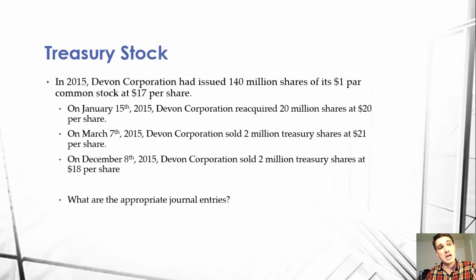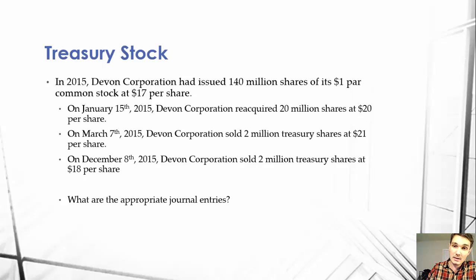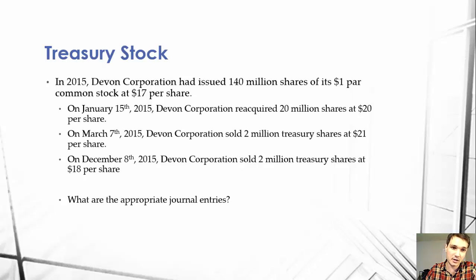I wrote this fun little question. In 2015, Devin Corporation had issued 140 million shares of its $1 par common stock at $17 per share. On January 15, 2015, Devin Corporation reacquired 20 million shares at $20 per share. On March 7, 2015, Devin Corporation sold 2 million treasury shares at $21 per share. And on December 8, 2015, Devin Corporation sold 2 million treasury shares at $18 per share. What are the appropriate journal entries?